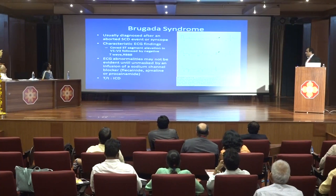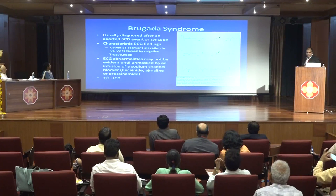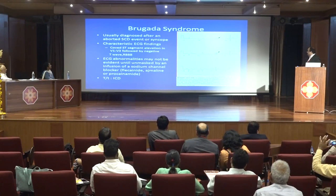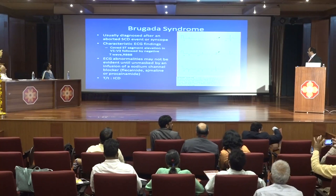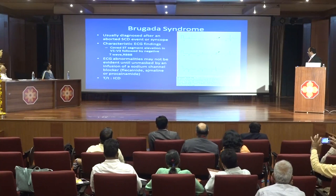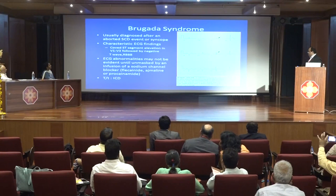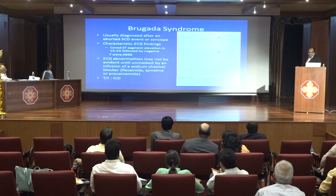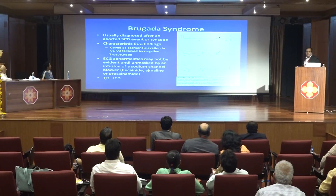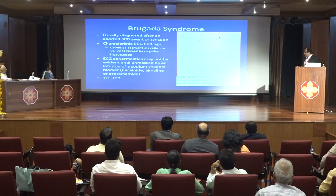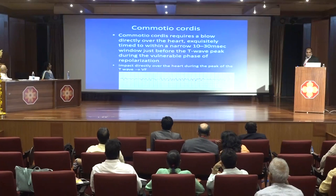Brugada is usually diagnosed after an aborted sudden cardiac death or syncope. The ECG is diagnostic with coved ST-segment elevation in V1, V2, V3 followed by a negative T-wave, with partial or complete right bundle branch block. ECG abnormalities may not be evident until unmasked by sodium channel blockers like procainamide or flecainide. Treatment is ICD placement.